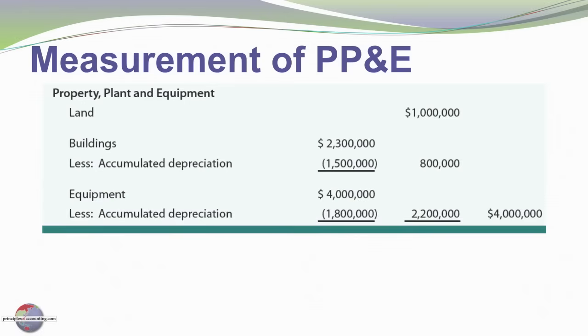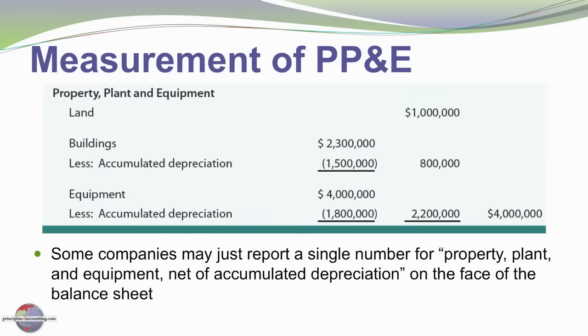I've shown each of the depreciable categories — buildings and equipment — net of their related accumulated depreciation. Some companies may report just a single number for property, plant, and equipment and leave this level of detail to the footnotes in the financial statement.